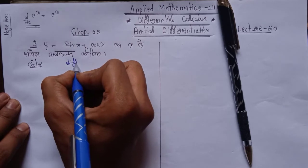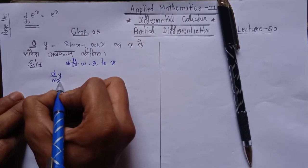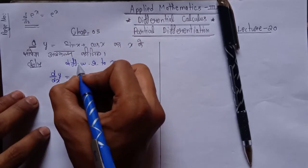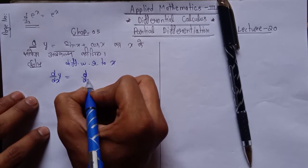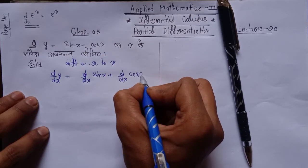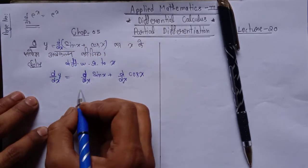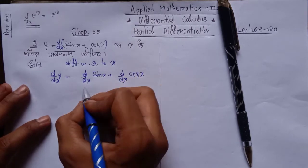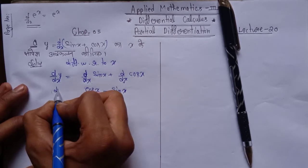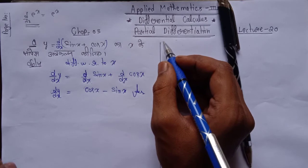So we would write differentiation with respect to x. We get dy/dx equal to d/dx of sin x plus d/dx of cos x. Taking the derivative inside: sin x differentiates to cos x, and cos x differentiates to -sin x. So our answer becomes dy/dx = cos x - sin x. That was the normal differentiation result.